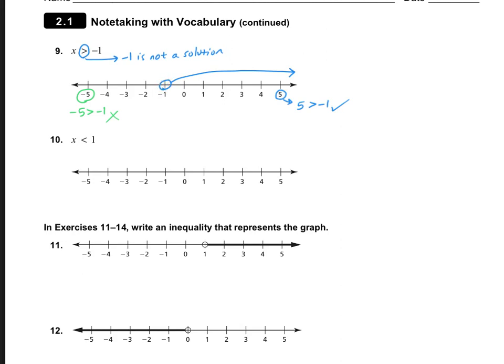Only everything above −1 is a solution. Notice that if we plugged in −1 itself: is −1 > −1? No — and we can see that because it's an open circle. You try number 10 on your own. You should have gotten an open circle at 1 and everything below 1.